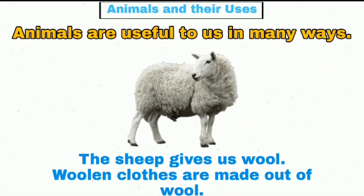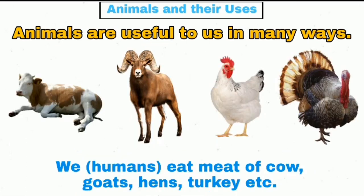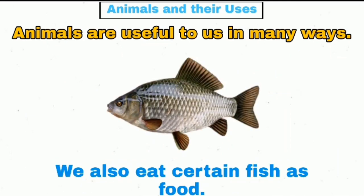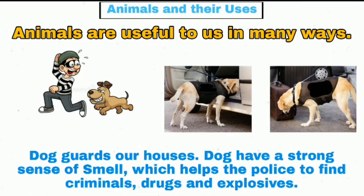The sheep gives us wool, and woolen clothes are made out of wool. We eat the meat of cow, goats, hen, turkey, etc. We also eat certain fish as food. Dogs guard our houses and have a strong sense of smell,